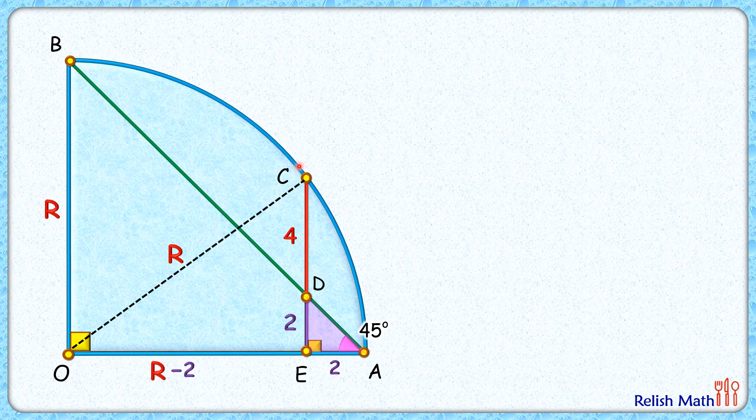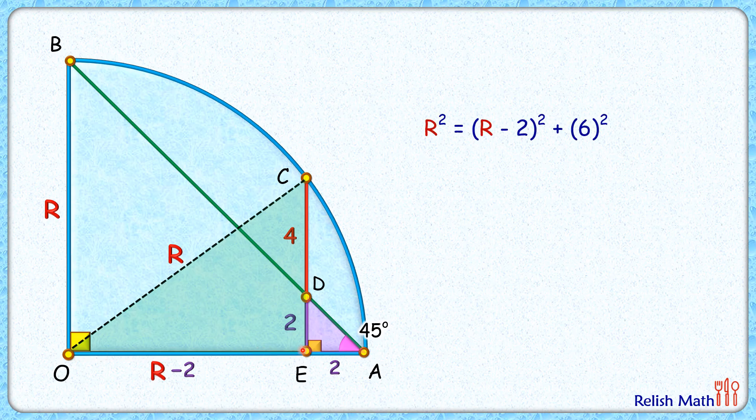Now if you look at this right angle triangle CEO, in this triangle let's apply Pythagoras theorem. So we'll get r² - that's the hypotenuse squared - equals (r - 2)²